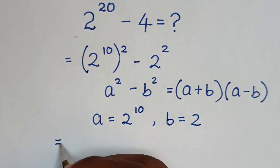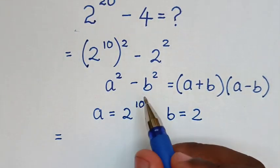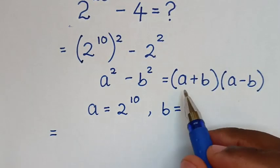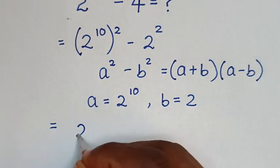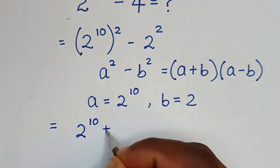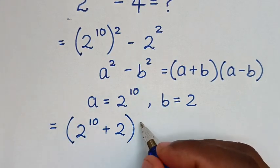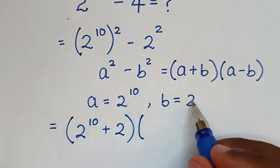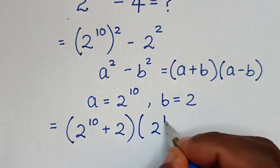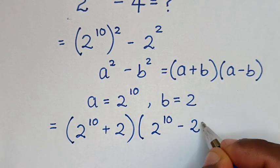Then it will be equal to, from this rule here we will apply this form. So it will be a plus b which is 2 to the power of 10 plus 2, times a minus b which is 2 to the power of 10 minus 2.